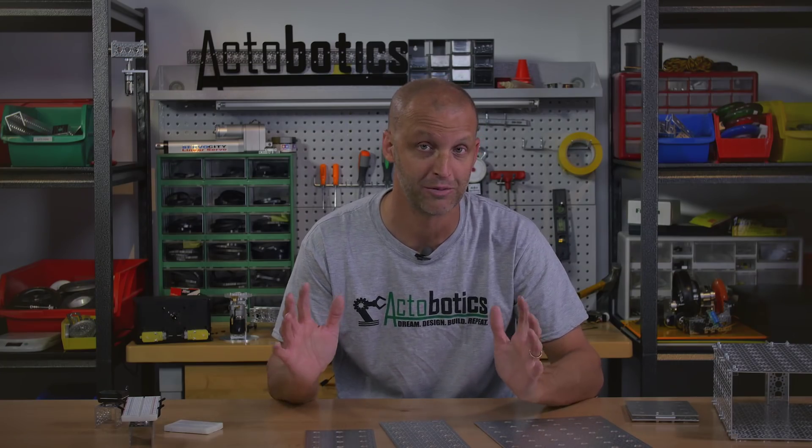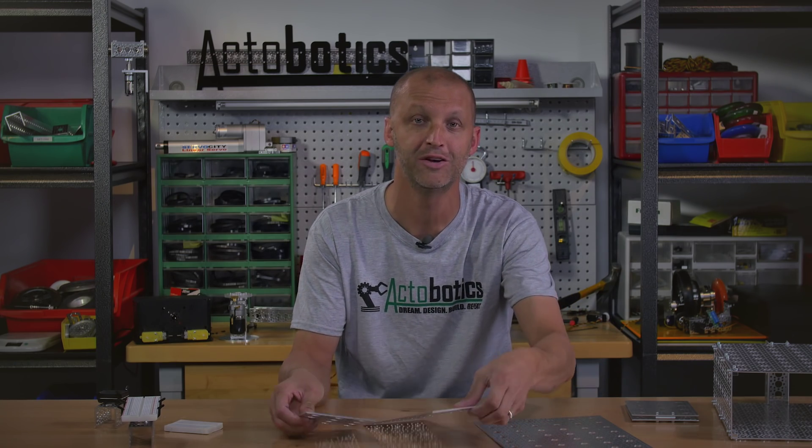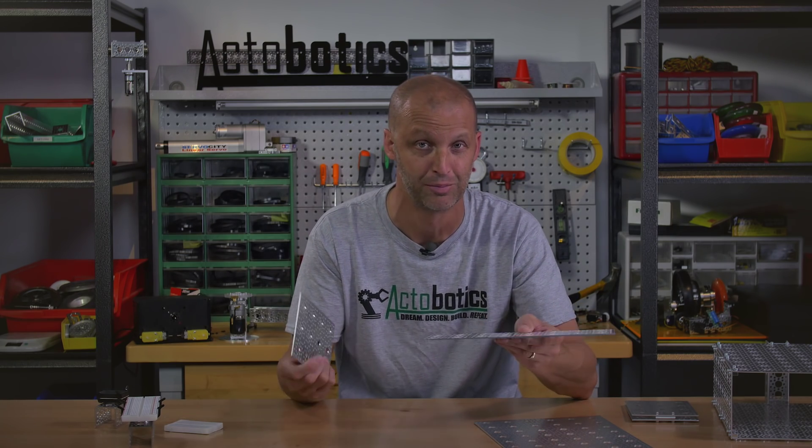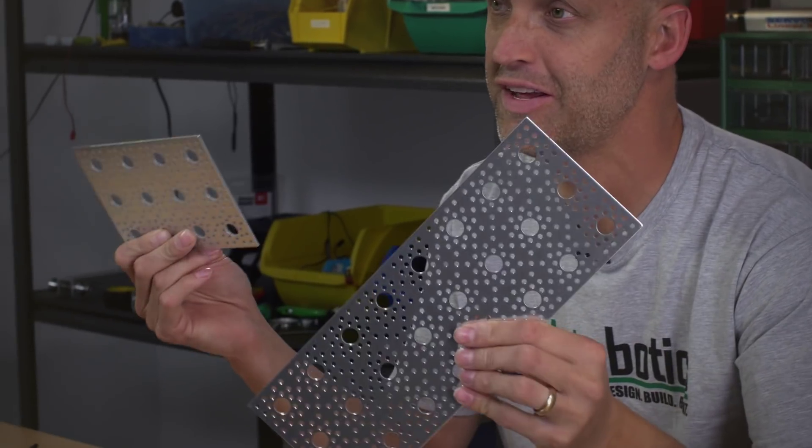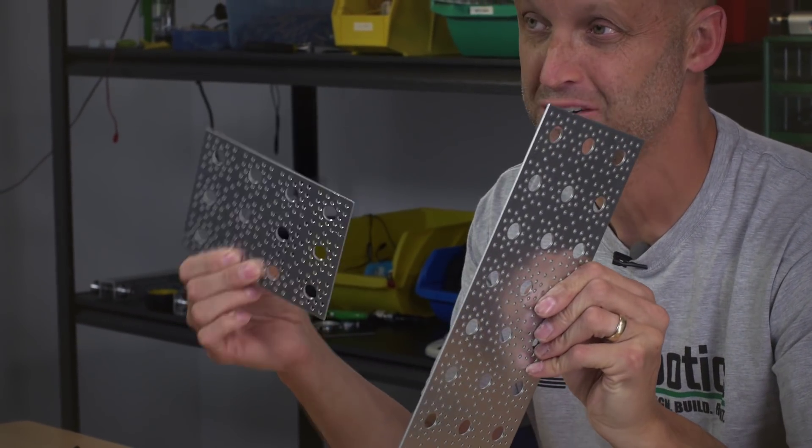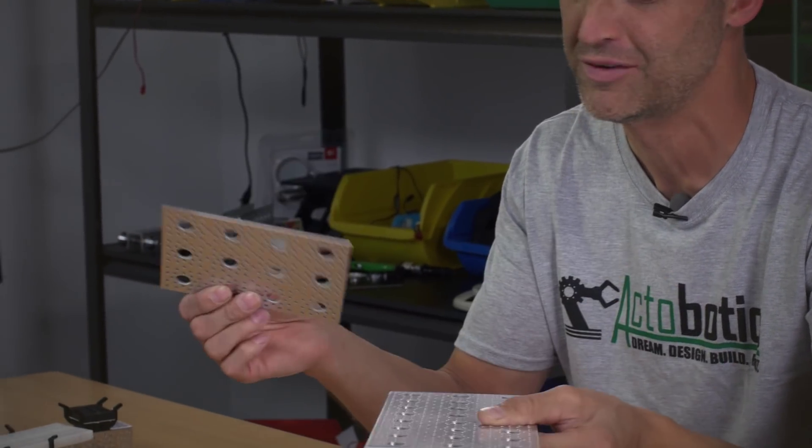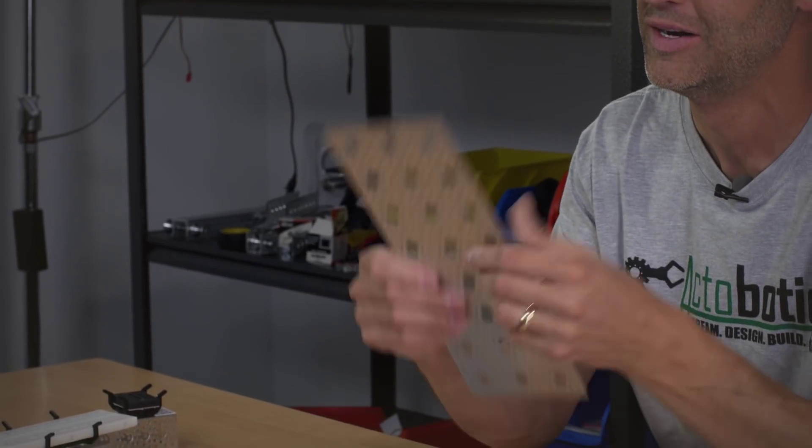And next what I have is something really cool, our brand new Actobotic flat panel plates. Basically these, as you can see, offer our Actobotic pattern in them. We offer three different sizes so you've got small, medium, and of course large.